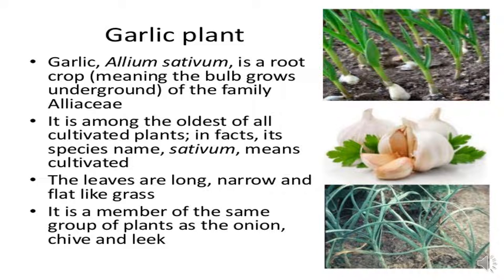Healing plant number one is garlic. Garlic, Allium sativum, is a root crop meaning the bulb grows underground, of the family Alliaceae. It is among the oldest of all cultivated plants. Its species name 'sativum' means cultivated. The leaves are long, narrow and flat like grass. It is a member of the same group of plants as the onion, chive and leek.